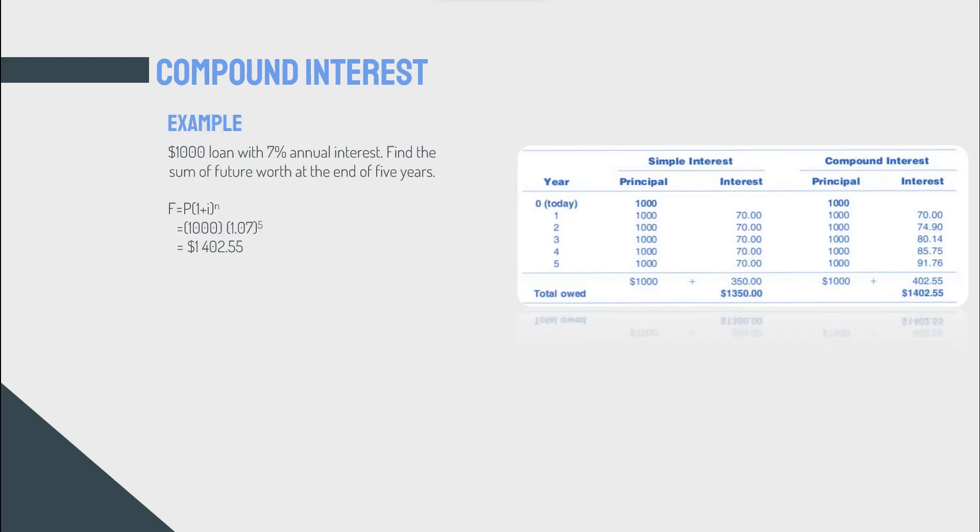Now let's take an example here. Again, we have a thousand dollars loan, 7% annual interest rate, and find the sum of the future worth at the end of the five years. So n equals five, P equals $1,000, i is 7%. Now what's the future value of money in this case? F would equal P, which is $1,000, multiplied by (1 + 0.07) to the power of five. So that would be $1,000 multiplied by 1.07 to the power of five, which would be $1,402.55.